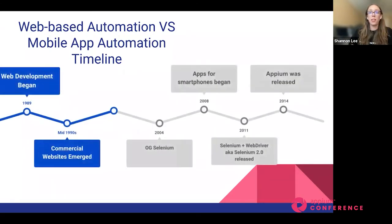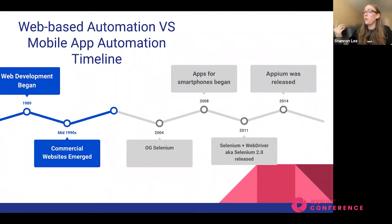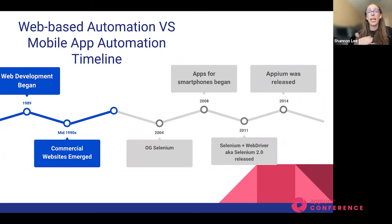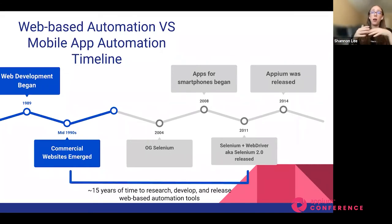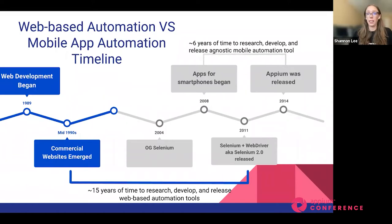Web development began around the end of the 1980s. We saw commercial websites emerge in the mid-1990s, then Selenium became a thought in 2004 and was combined with WebDriver — aka Selenium 2.0 — released in 2011. In 2008, we saw apps for smartphones begin, and then Appium was released in 2014. There has been at least 15 years to research, develop, and release web-based automation tools, compared to roughly only six years for mobile application automation.